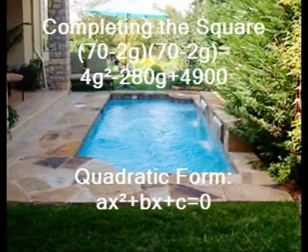Fred and Josie will then multiply (70 - 2g) times (70 - 2g), which is called completing the square. When they do the multiplication, they get the equation 4g² - 280g + 4,900 = 2,450.